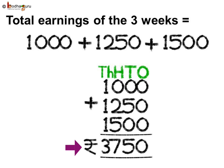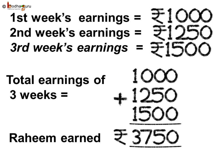Thus he earned rupees 3750 in the three weeks. Let us see again how we solve this problem. Rahim's first week earnings is equal to rupees 1000, second week earnings is equal to rupees 1250, and third week earnings is equal to 1500. So the total earnings of three weeks is equal to 3750. Thus Rahim earned a total of rupees 3750 in three weeks.